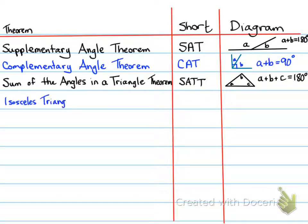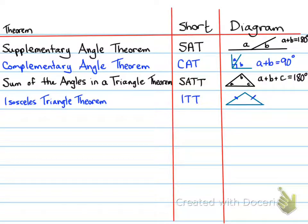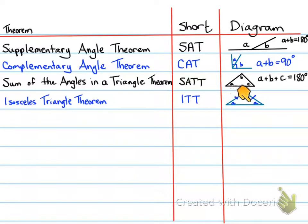Next is the Isosceles Triangle Theorem, also known as ITT. ITT states that if you have two sides that are equal in a triangle, their opposite angles are also equal. So this side's opposite angle equals the other side's opposite angle — two equal sides means two equal angles.